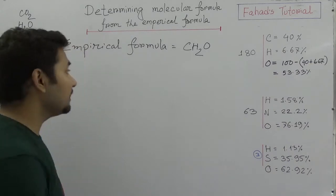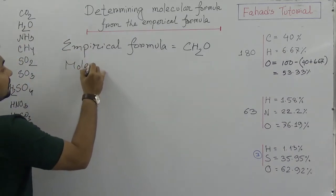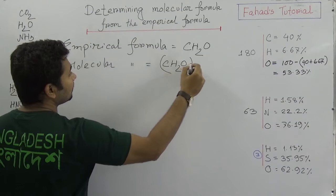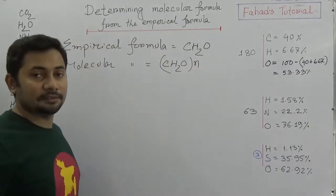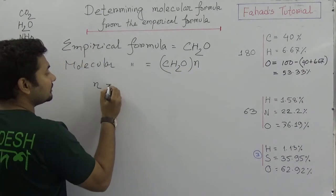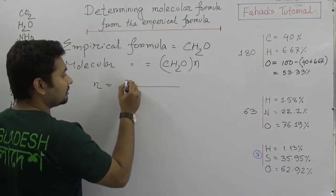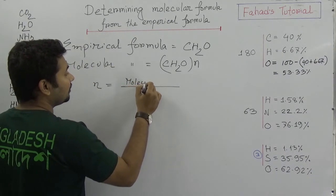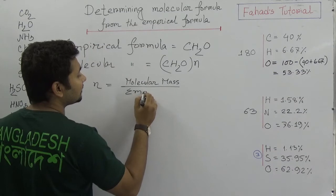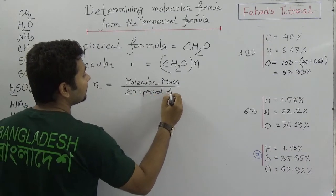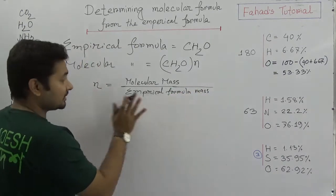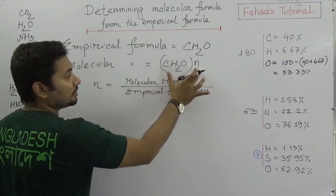When you have the empirical formula, think about the molecular formula. The molecular formula would be (CH2O)N, and this N we need to find out. Because N is equal to the molecular mass of the compound divided by the empirical formula mass. I will explain how to do it. The molecular formula is essentially the empirical formula multiplied by N.